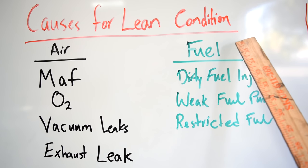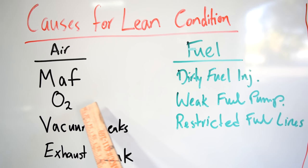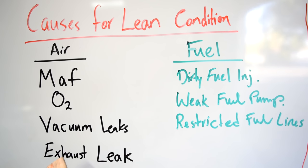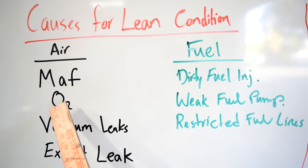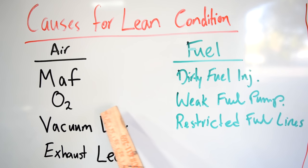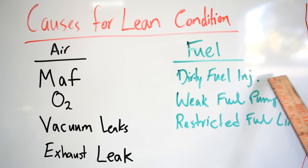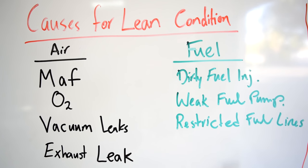Things that can cause a lean condition: on the air side, a bad or dirty MAF sensor, a bad oxygen sensor reporting lean when it shouldn't be, and vacuum leaks, which are a very common cause. Also an exhaust leak upstream of your pre-cat O2 sensor — if that exhaust manifold gasket is leaking, it allows air into the exhaust system, making the O2 sensor falsely report lean. On the fuel side, dirty fuel injectors, a weak fuel pump, and a restricted fuel filter can all cause a lean condition.